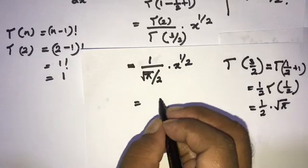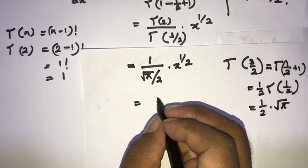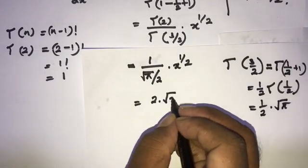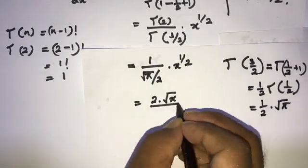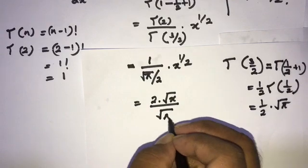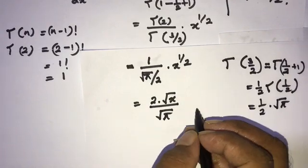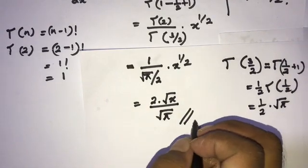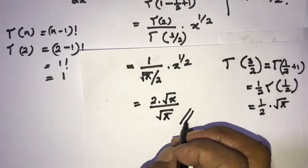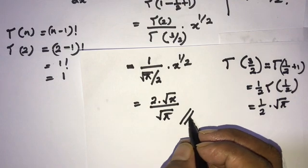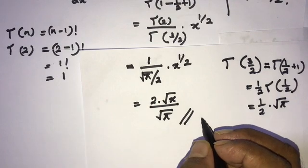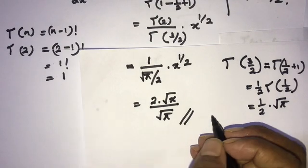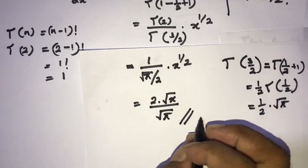Therefore the result is 1 over (one half times square root of pi), times x to the one half, which gives 2 times square root of x over square root of pi. This is the half derivative of x. If you like this video, please subscribe to this channel. Thank you for watching.